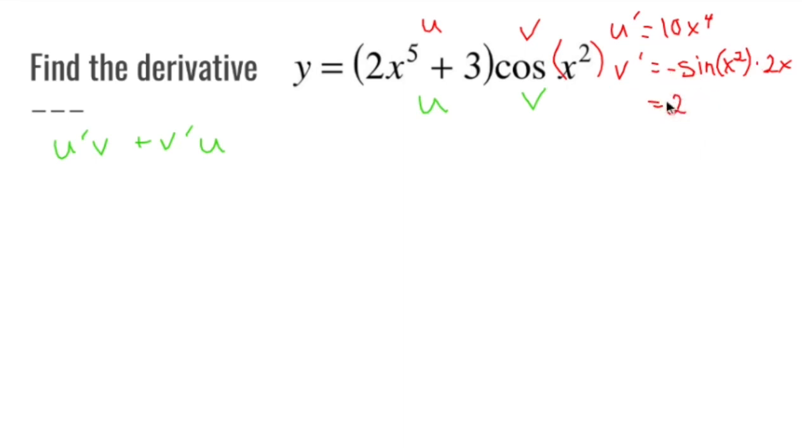So cleaning this up, I get negative 2x sine x squared. So let's put this all together.